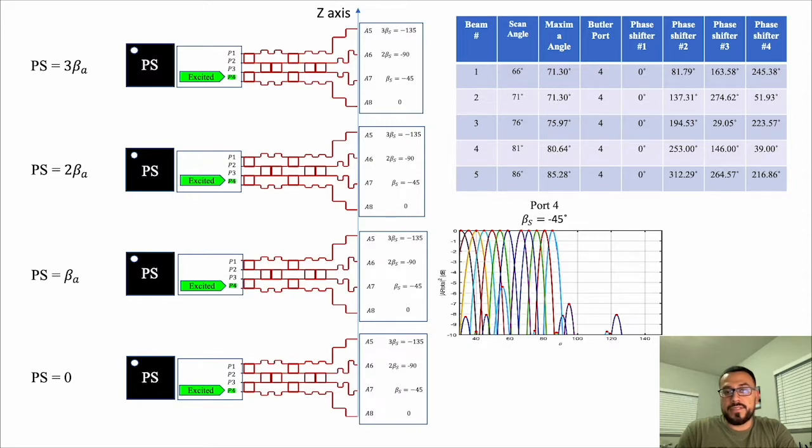Here, we also see that we need to excite port 4 to achieve the scanning range from 66 degrees to 86 degrees. Since scanning towards broadside induces a lot of side lobe errors, it was best to first find the closest degree that had no interference from broadside and begin to scan from that reference point.